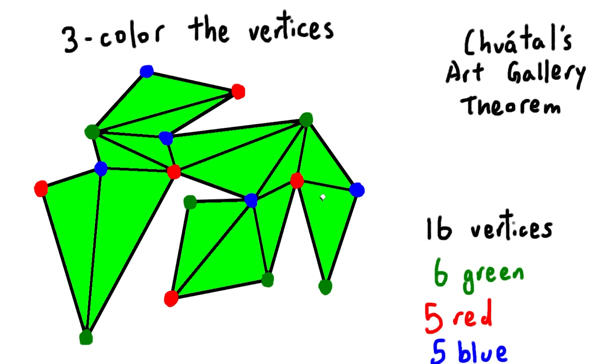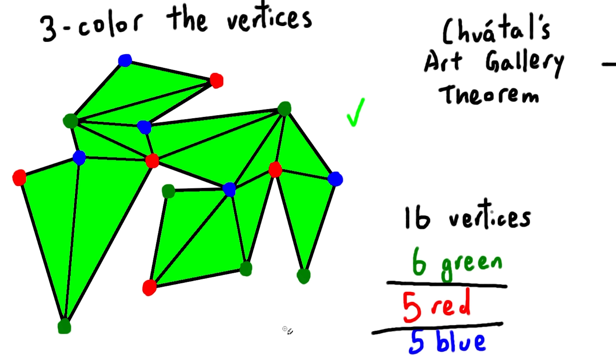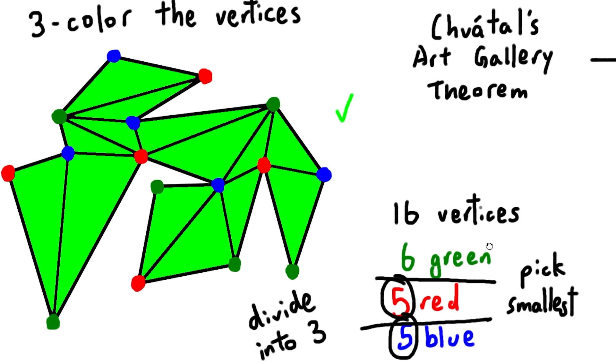The same thing is true for the green and red vertices, and we simply pick which color has the least number of vertices so that we can have the least number of guards. This matches up to the divide by three and remove the remainder thing we saw earlier.